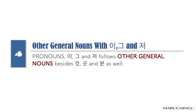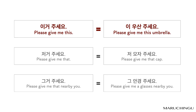Other general nouns with 이, 그, and 저. 이, 그, and 저 can follow other general nouns besides 것, 곳, and 분 as well. For example: 이거 주세요 and 이 우산 주세요 have the same meaning.